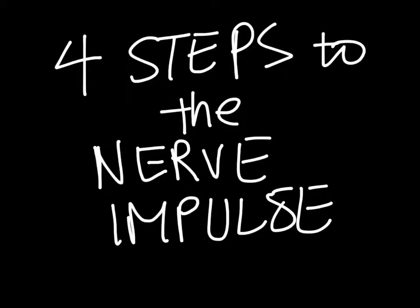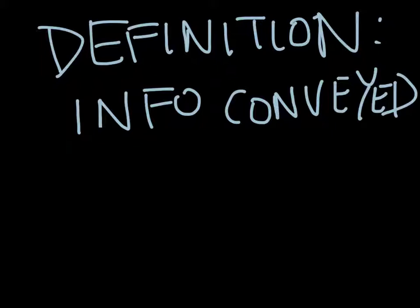Today I'll be talking about the four steps to the nerve impulse. The definition of the nerve impulse is how information is conveyed along neurons.